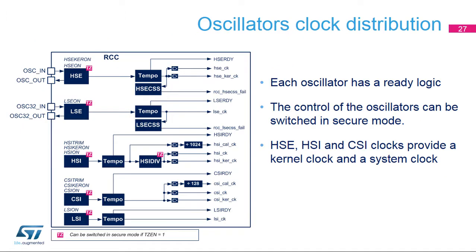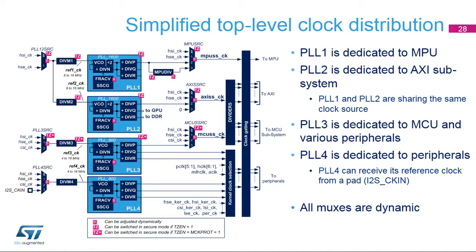The oscillators don't deliver a clock if they are not ready; the ready flag is based on a temporization, which is bypassed for the LSE clock when LSE is in bypass mode. The control of the oscillators can be switched to secure mode when the TZEN bit is set to 1. The HSE, HSI, and CSI oscillators provide a kernel clock dedicated to peripherals and a system clock. PLL1 and PLL2 can use either HSE or HSI as reference clock. PLL3 can use HSE, HSI, or CSI. PLL4 can use HSE, HSI, CSI, or I2SCKIN as reference clock.